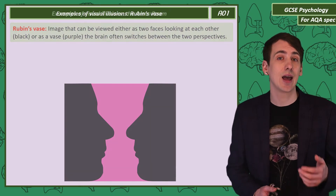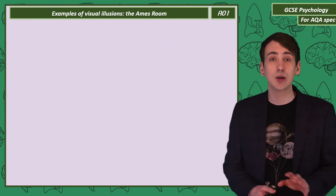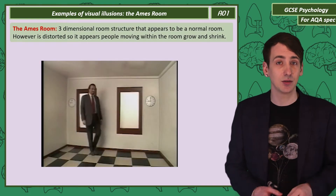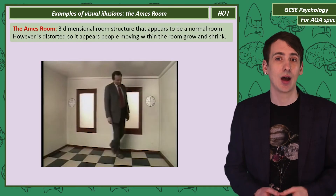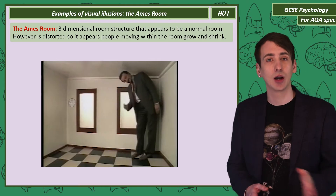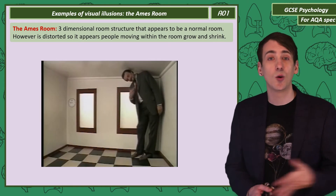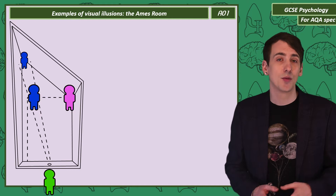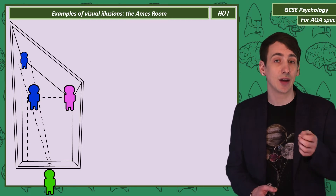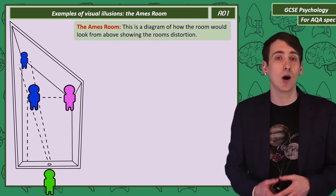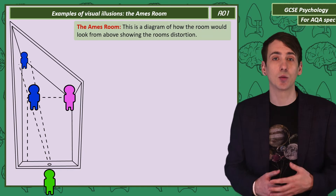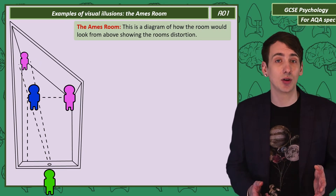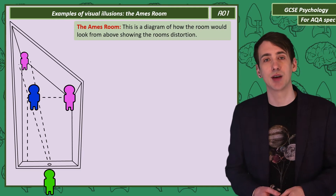Now we have the Ames Room. This is a three-dimensional structure built so that from just one perspective it looks like a normal room. However, people within it appear to be growing larger or smaller as they move around the room. The reason for this is that all the angles within the room are distorted — it only looks like a normal room from that one perspective. The mind assumes that the room is normal and that the person must be changing in size.